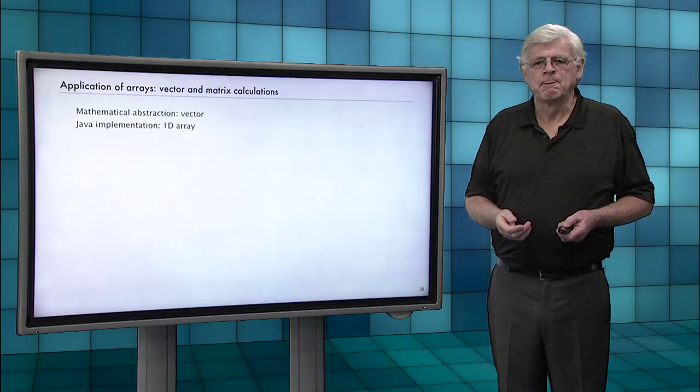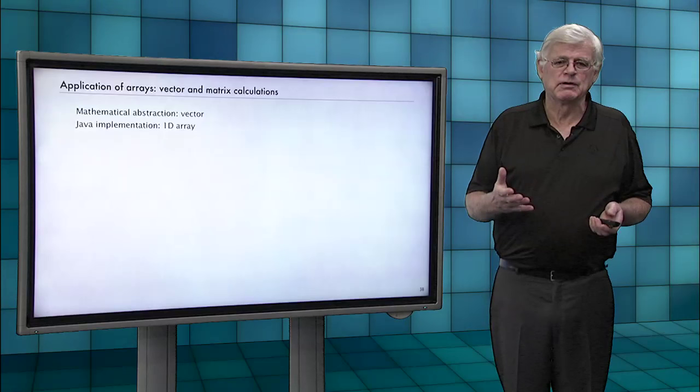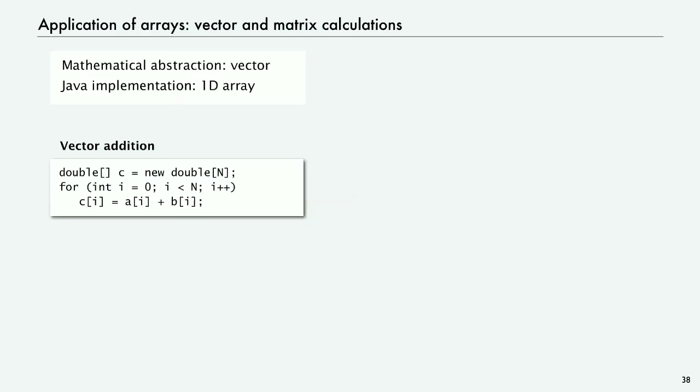So one application is vector and matrix calculations. And these are very familiar to most of you, and we won't dwell on it for now. But it's certainly a natural application of arrays. So if we have two arrays, A and B, that are both of length N, then we can create a new array C of that same length, and then add those two vectors, A and B, to get the result for C. And so it's just a term-by-term add.